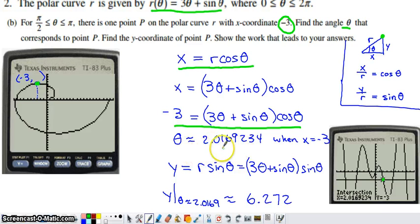I don't want to round to three digits yet because I'll use this value to find the y-coordinate. To find y, I need a relationship between y, r, and θ. Using the same triangle, y = r sin θ. Solving for y and then substituting r = 3θ + sin θ gives y = (3θ + sin θ)sin θ.